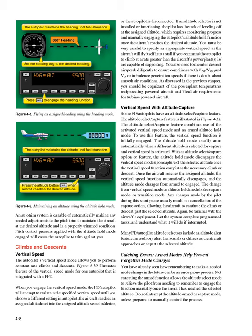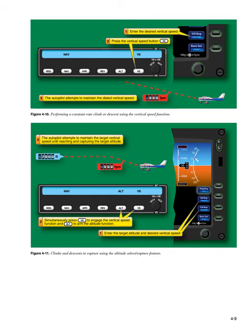Be familiar with the aircraft's equipment. Let the system complete programmed tasks, and understand what it will do if interrupted. Many FD/autopilot altitude selectors include an altitude alert feature — an auditory alert that sounds or chimes as the aircraft approaches or departs the selected altitude. Armed modes help prevent forgotten mode changes. Not cancelling the armed function allows the altitude select mode to relieve the pilot from needing to remember to engage the function manually once the aircraft has reached the selected altitude. Do not interrupt the altitude armed or capture mode unless prepared to manually control the process.